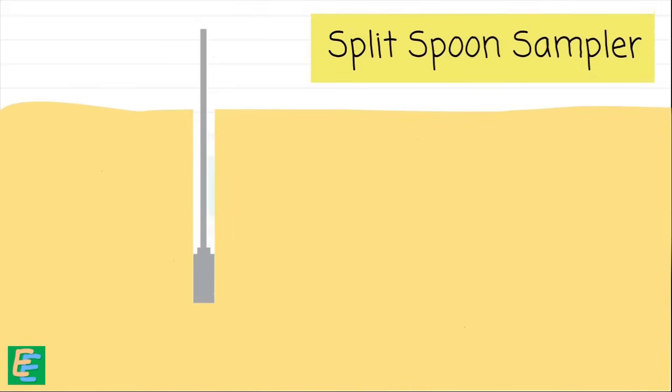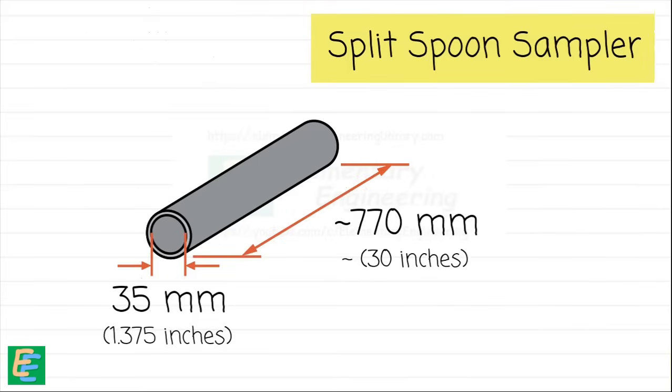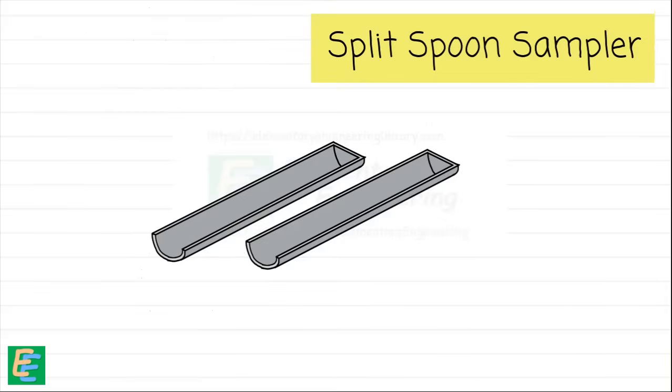Once drilling is complete, we insert a special device called the standard split spoon sampler into the borehole. This sampler is cylindrical in shape and is a hollow tube. It has an internal diameter of 35 mm and a total length of approximately 770 mm. It is designed to split longitudinally into two halves.